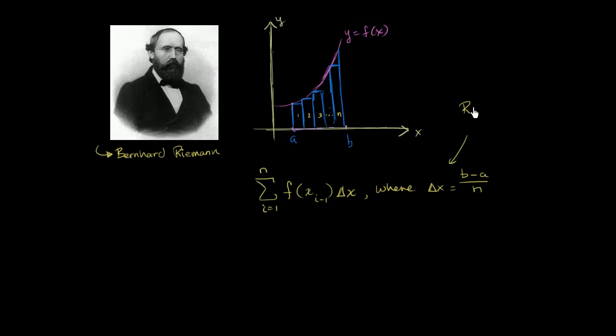So this right over here is a Riemann sum. And when people talk about Riemann sums, they're talking about the more general notion. You don't have to just do it this way. You could use trapezoids. You don't even have to have equally spaced partitions. I used equally spaced partitions because it made things a little bit conceptually simpler.